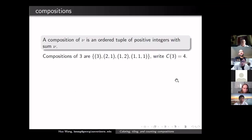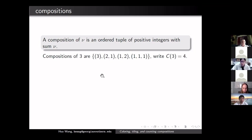An integer composition of a number n is an ordered sum of positive integers — n is always a positive integer. The keyword is 'ordered,' which is what separates this from partitions. For example, the compositions of three are: a single 3, or 2+1, or 1+2, or 1+1+1. The order matters, which is why 2+1 and 1+2 are different.